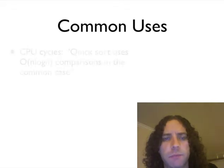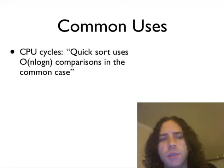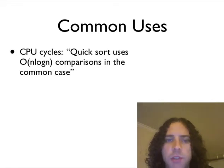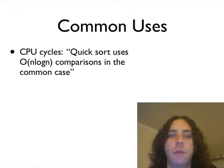So common uses for this thing. CPU cycles is usually what we end up talking about. So there'd be something like, okay, Quicksort uses the big O of n log n comparisons in the common case. This is a true statement, it's one that people use all the time, and it's sort of a mainstay in a lot of computer science.